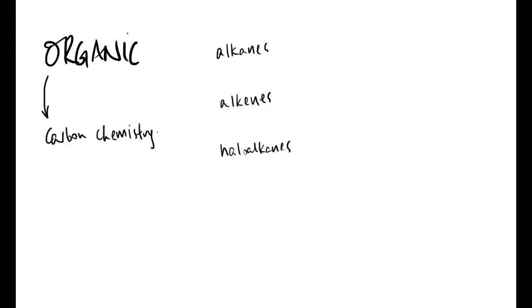For alkanes, a few things you need to know: the general formula is CnH2n+2, for example C4H10. For alkenes, the general formula is CnH2n, for example C4H8. Haloalkanes' general form is more difficult because it depends on how many halogens you've got. An example would be chloromethane, which is a methane molecule with a chlorine on it.